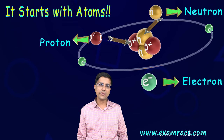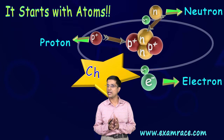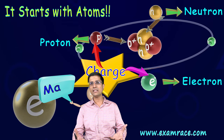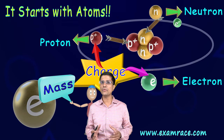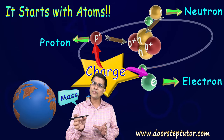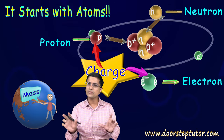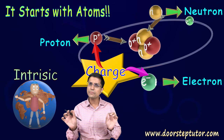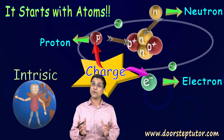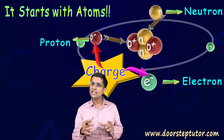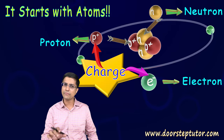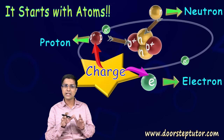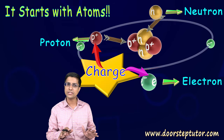Electrons and protons have a very special property known as charge. It is a very basic, intrinsic property — just like mass. Mass is a basic intrinsic property of an object; we cannot really question where it comes from. Similarly, charge is also a very basic property of electrons and protons. They have this property called charge and we just accept it — we're not really questioning where it comes from.